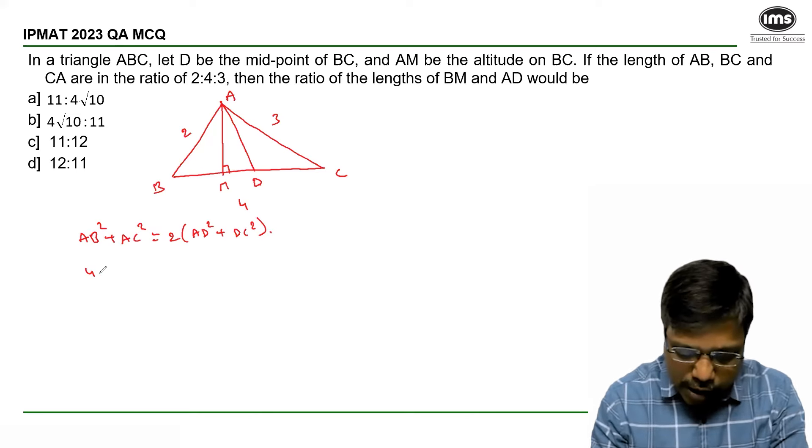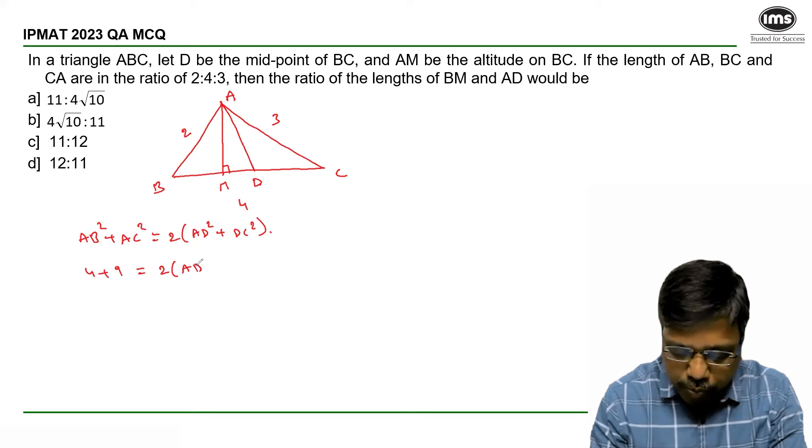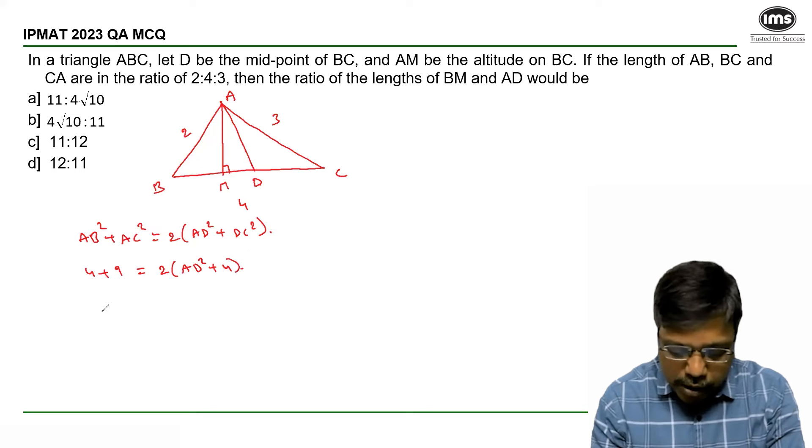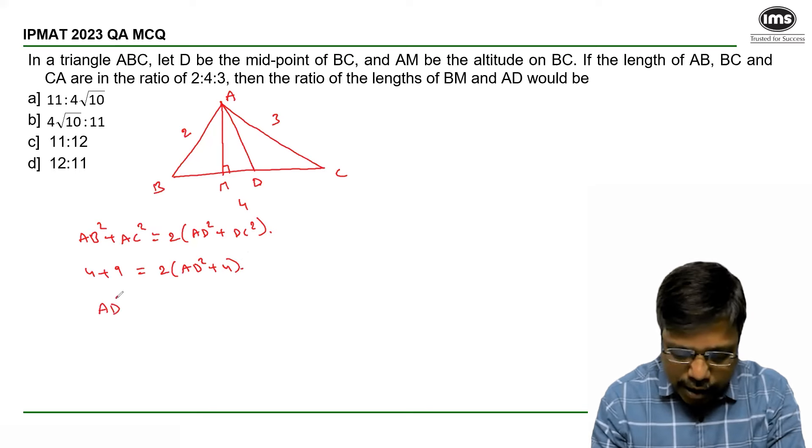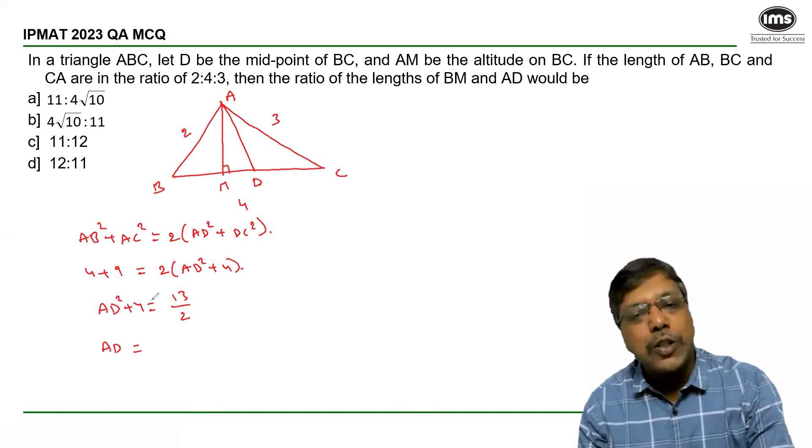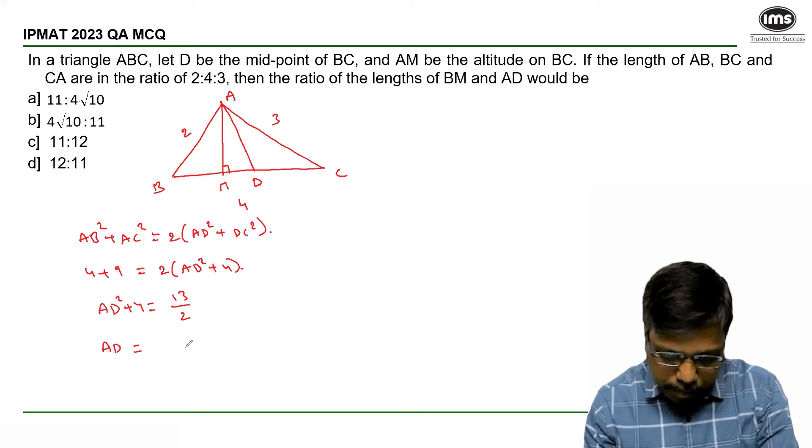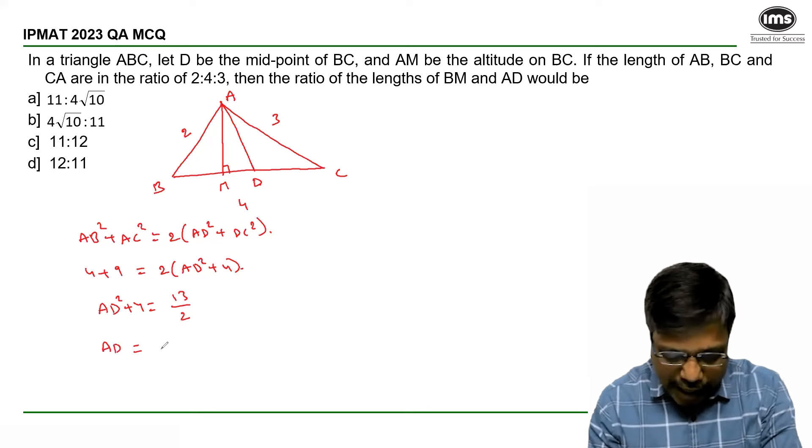So AB² + AC² = 2·AD² + DC². From here, 4 + 9 = 2·AD² + 4, which gives 13 = 2·AD² + 4, so AD² = 5/2 and AD = √(5/2).